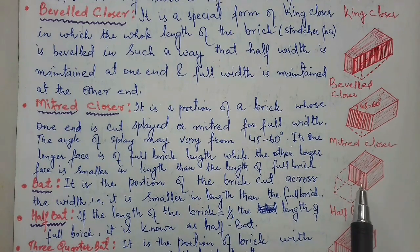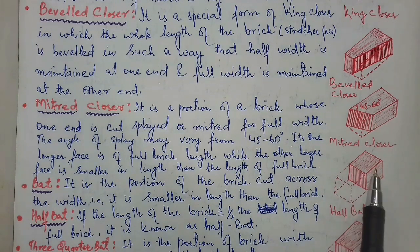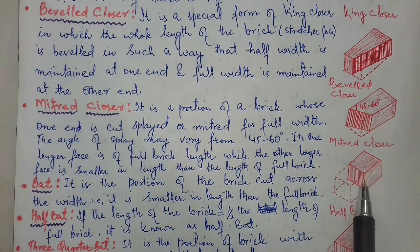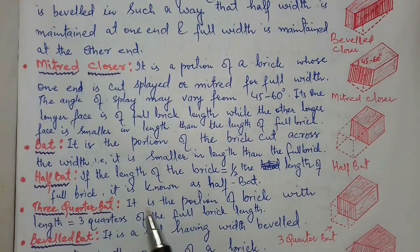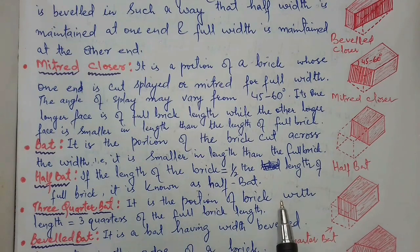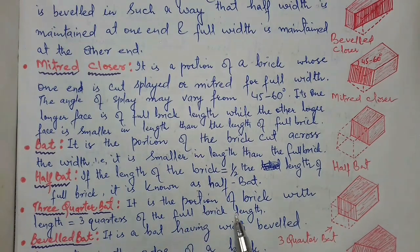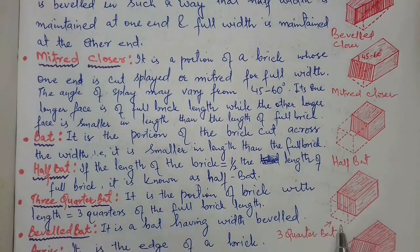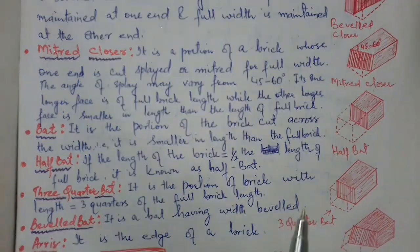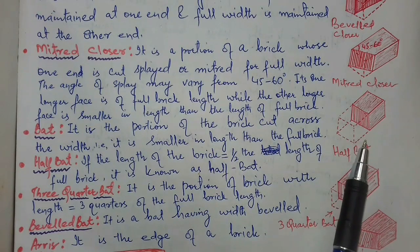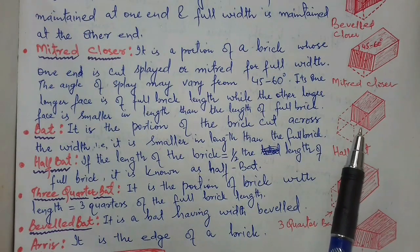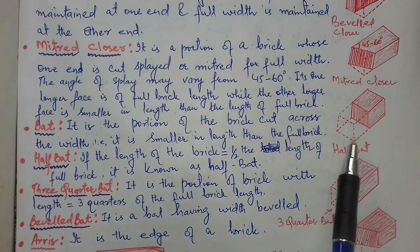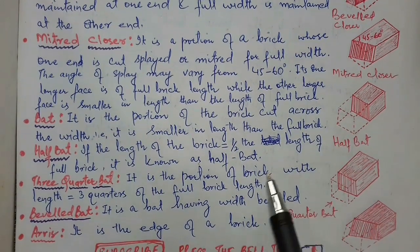As you can see in this diagram, if the brick is cut such that its length becomes equal to half the length of the full brick, we can call it a half bat. Three-quarter bat: it is the portion of a brick with length equal to three-quarters of the full brick length. If a portion of a brick has a length equal to one-fourth of the brick, we can call it a quarter bat.